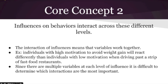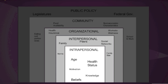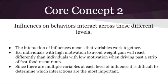The second core concept is that influences on behaviors interact across these different levels. Since there are so many variables at each level of influence, it's difficult to determine which interactions are the most important. As you saw from this image, there are multiple variables at each level of influence, and all of them must be incorporated in the behavior change process.